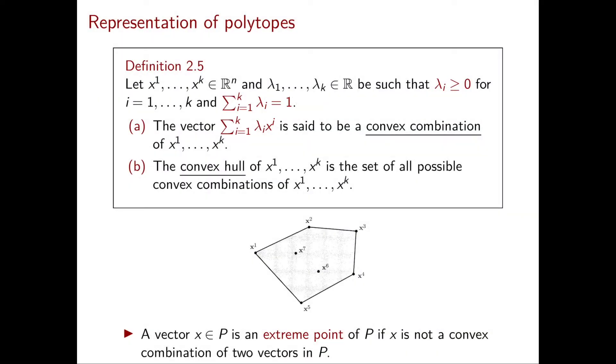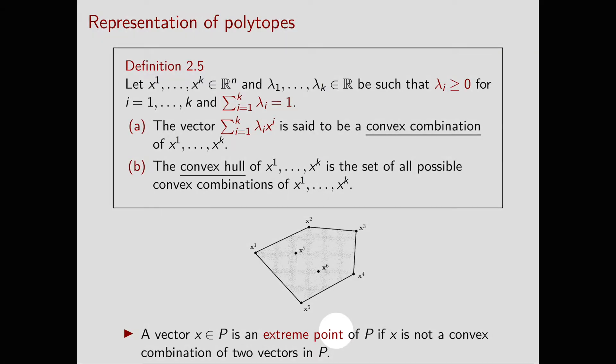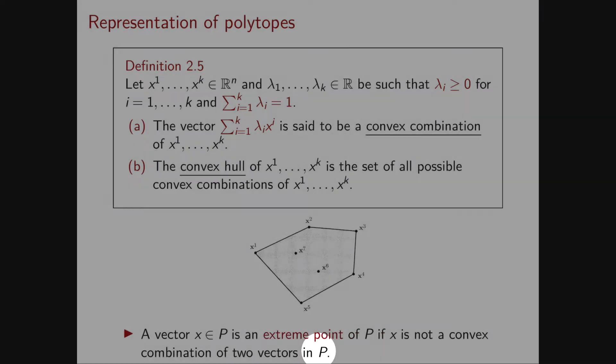We have already seen an example of a convex combination of two vectors in the definition of extreme point. Using the definition of convex combination, we can now reformulate the definition of extreme point: the vector x in P is an extreme point of P if x is not a convex combination of two vectors in P.